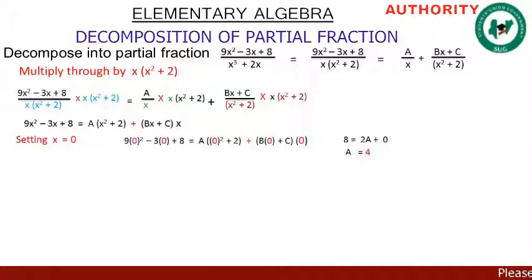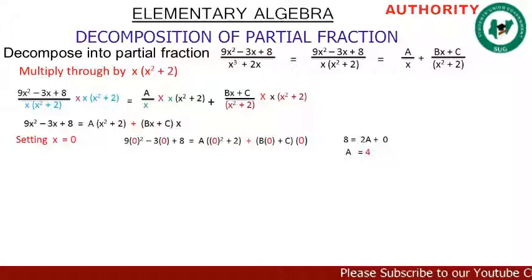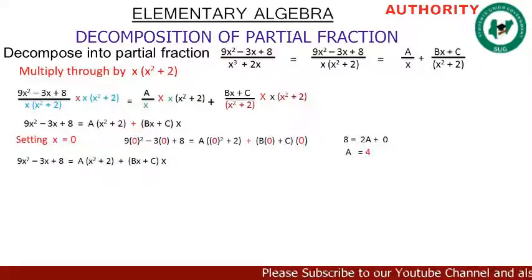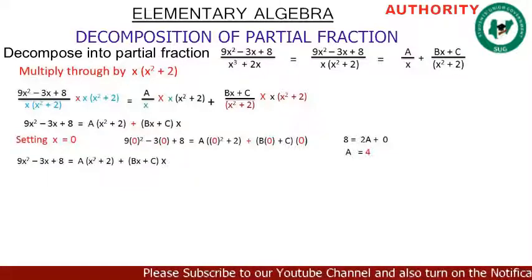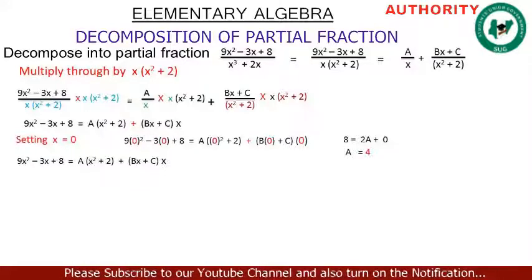To find B and C we use the method of comparing coefficients. Our expression is: 9x² - 3x + 8 = A(x² + 2) + (Bx + C)·x. Let's expand this.